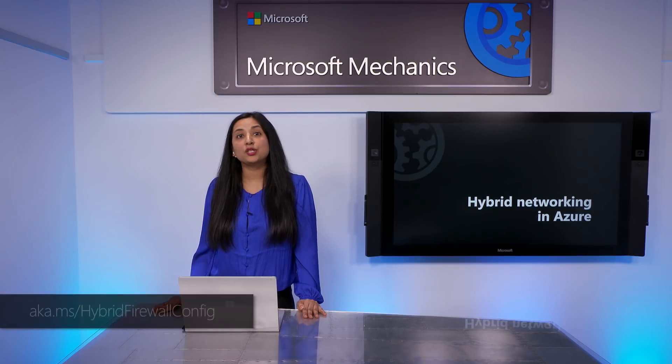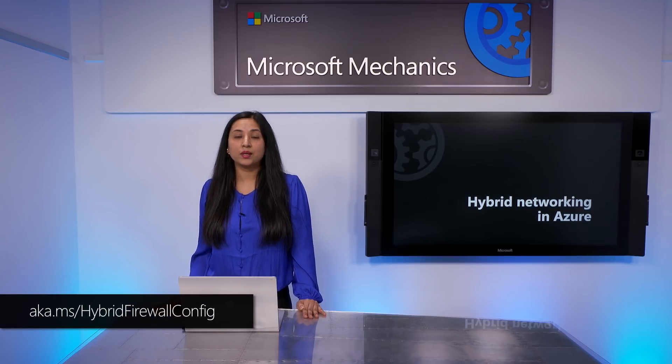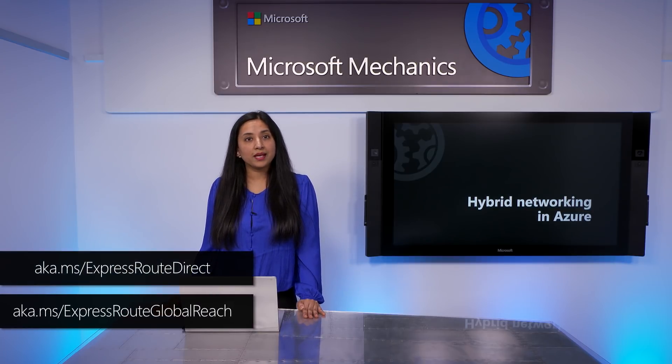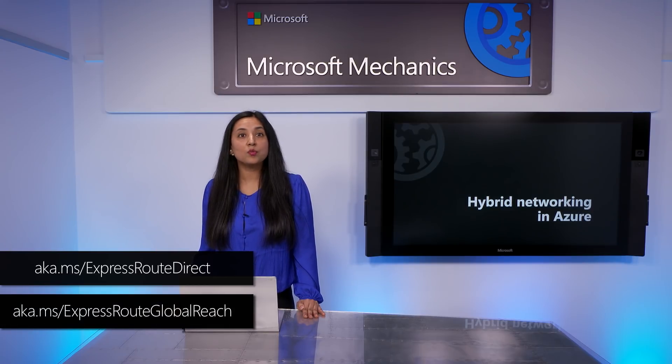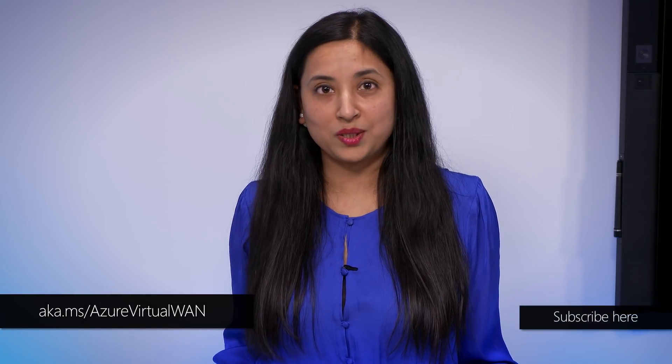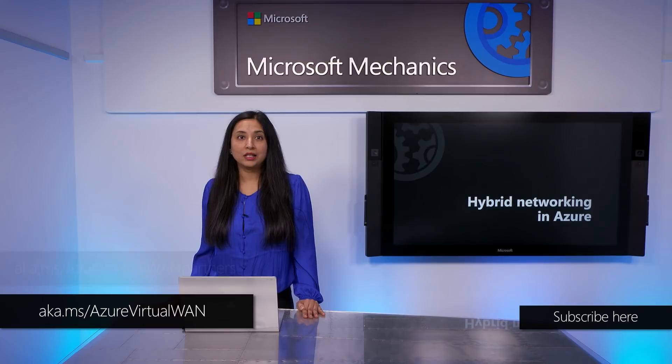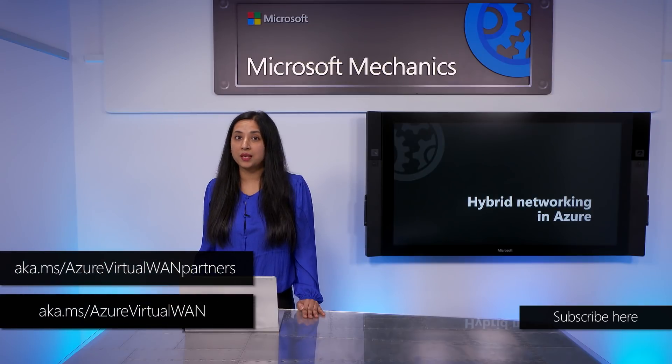That was an overview of networking options in Azure and recent updates to our ExpressRoute services. You can get started by setting up an Azure trial to configure a hybrid network and firewall. ExpressRoute Direct and ExpressRoute Global Reach are available today — you can learn more at the link shown. And finally, if you're exploring internet-based connectivity, try Azure Virtual WAN and check for supported partner appliance devices at the link shown. Thank you for watching.